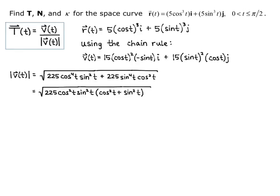And this is perfect — this is exactly what I want to end up with: cosine squared of t plus sine squared of t, because our Pythagorean identity says that equals 1. So now all I'm taking the square root of is 225 cosine squared of t sine squared of t, which is a perfect square. So I get 15 cosine of t sine of t. And that's the magnitude of velocity.